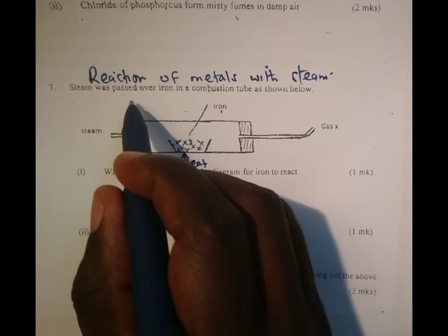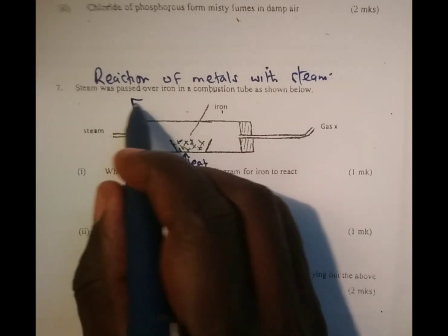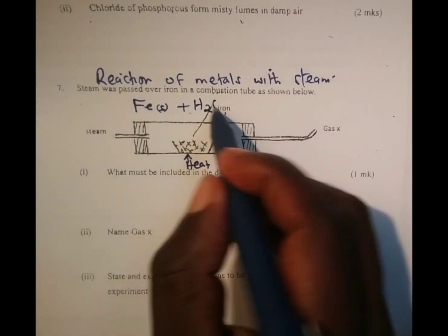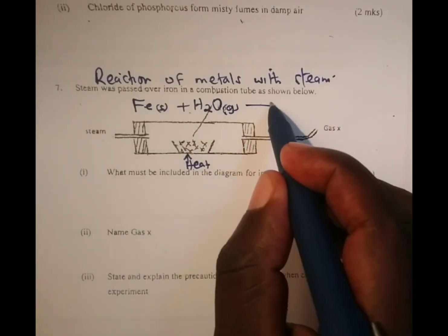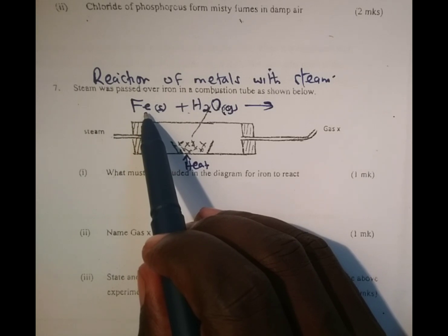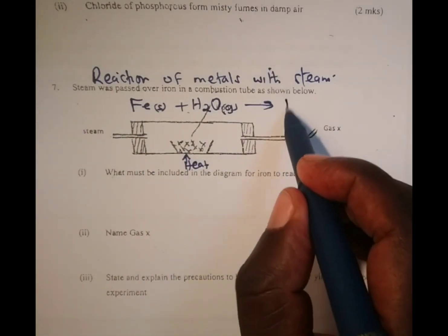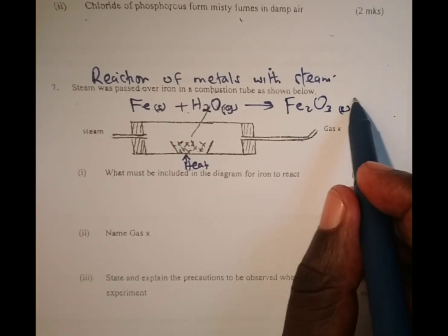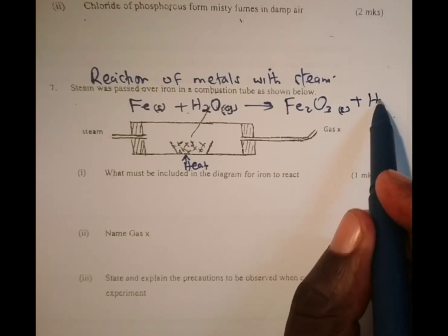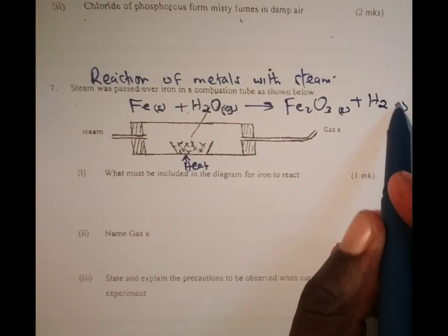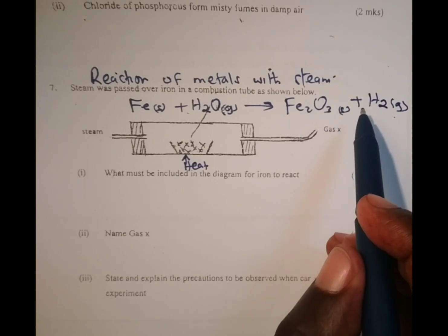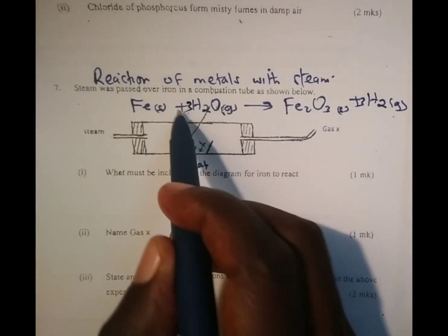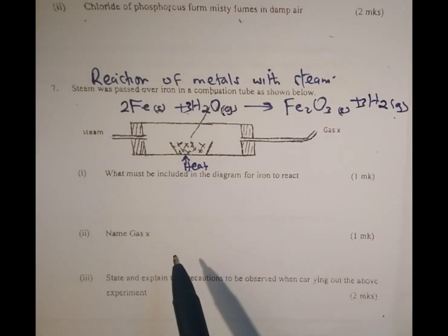We know that steam will react with iron. Steam is water in vapor form or in gaseous form. The reaction between iron and water vapor will produce iron 2 trioxide and also in the process hydrogen gas is produced. To balance the equation we write 3 behind hydrogen, we write 3 behind water, and also 2 behind iron metal.